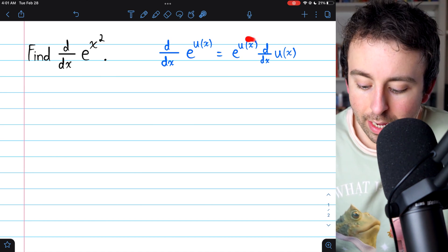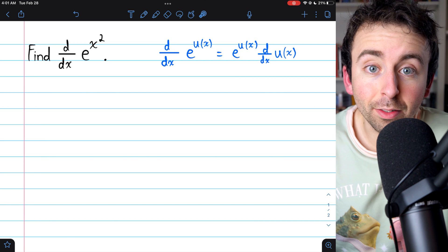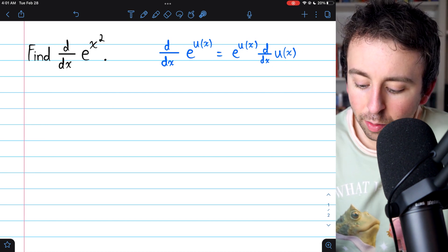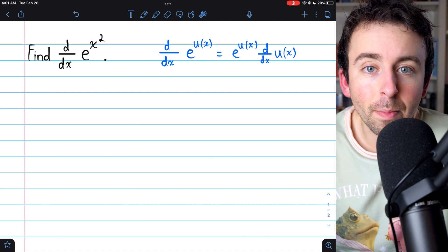How you do it is you just have e to that power, that doesn't change, but then you need to multiply by the derivative of that inside function that's in the power.